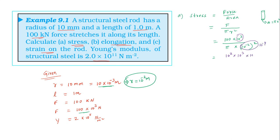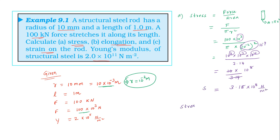Working through the calculation: 10⁵ divided by (3.14 × 10⁻⁴) gives approximately 3.18 × 10⁸ N/m². So the first answer — stress — is 3.18 × 10⁸ N/m².